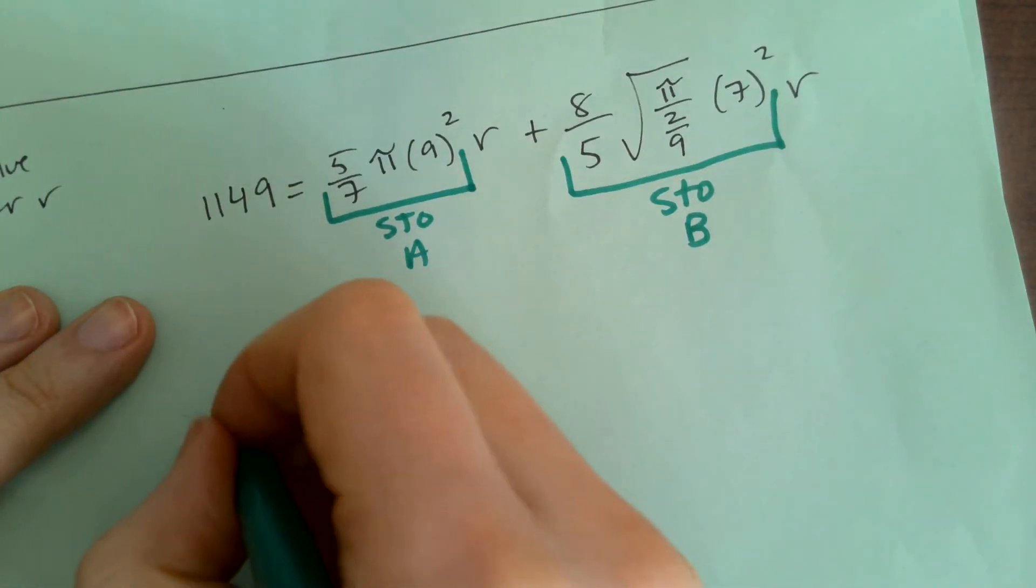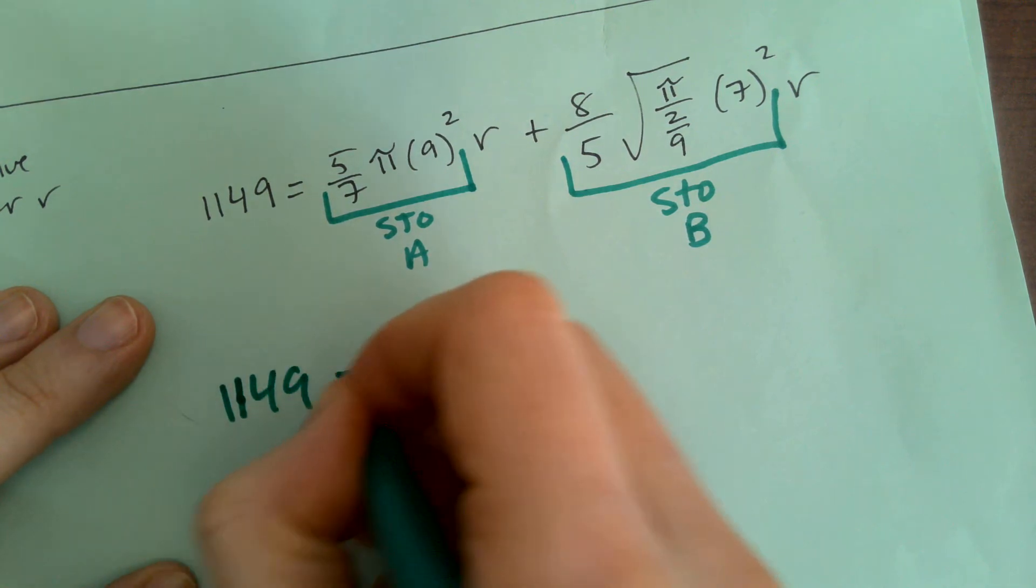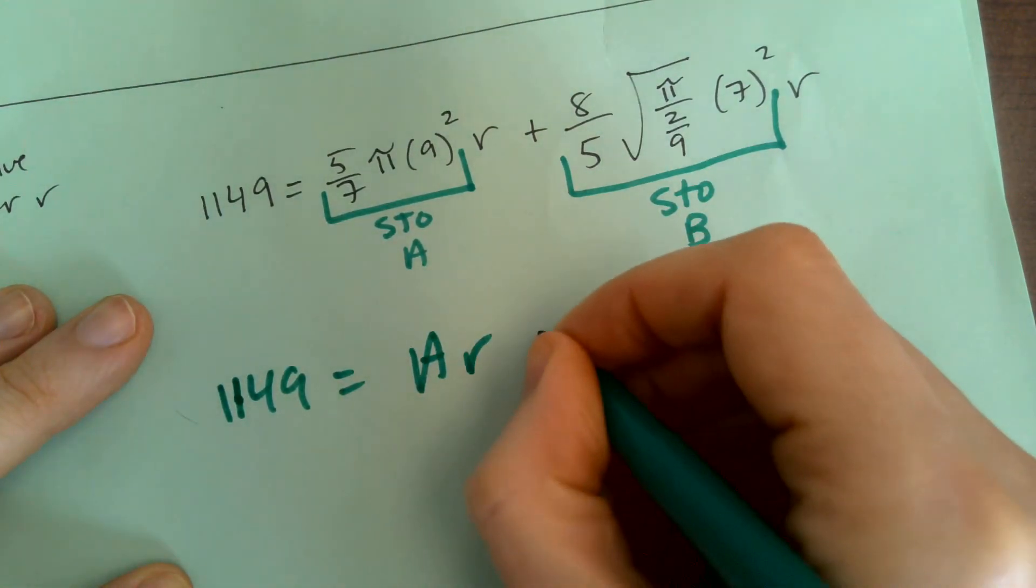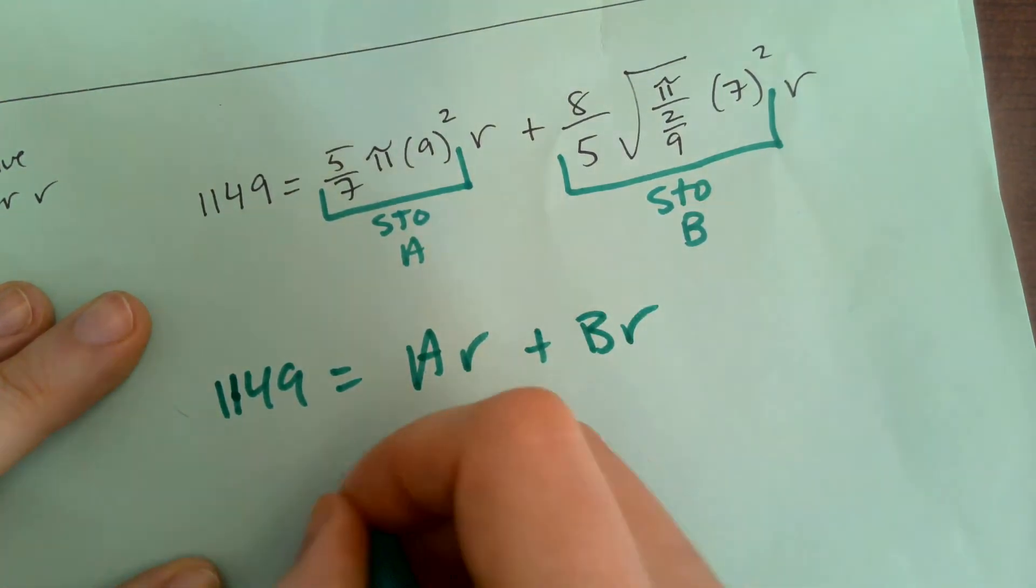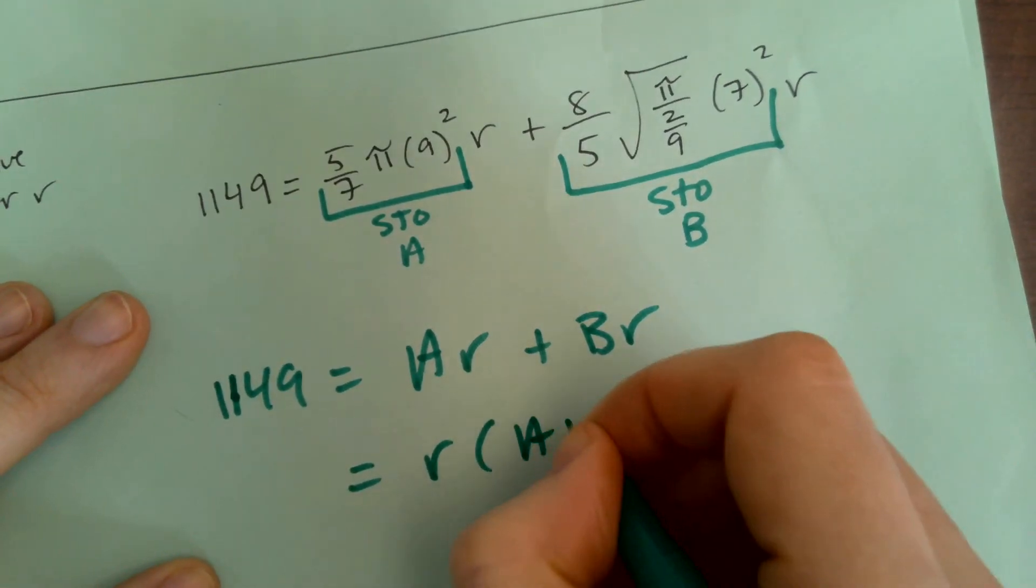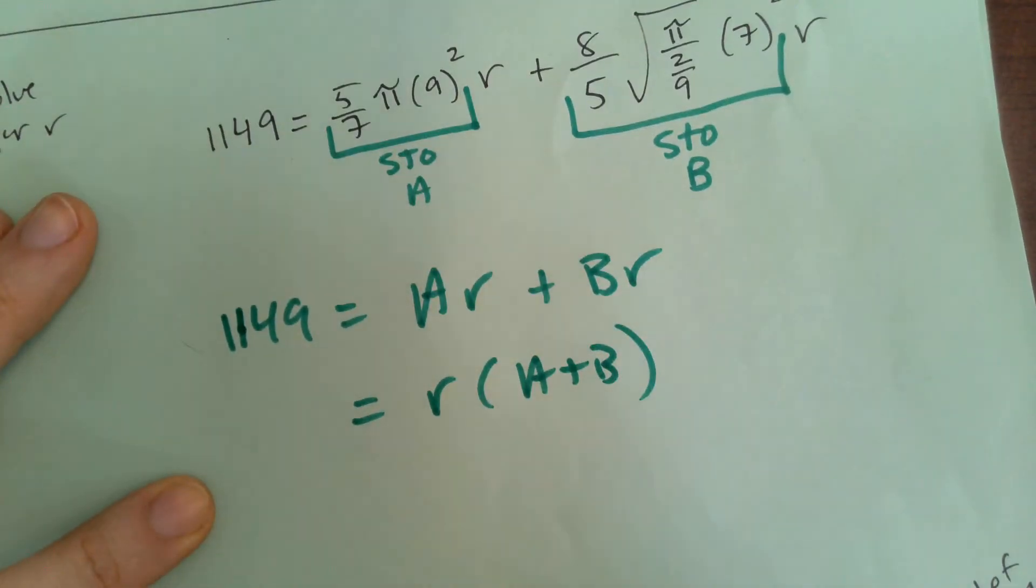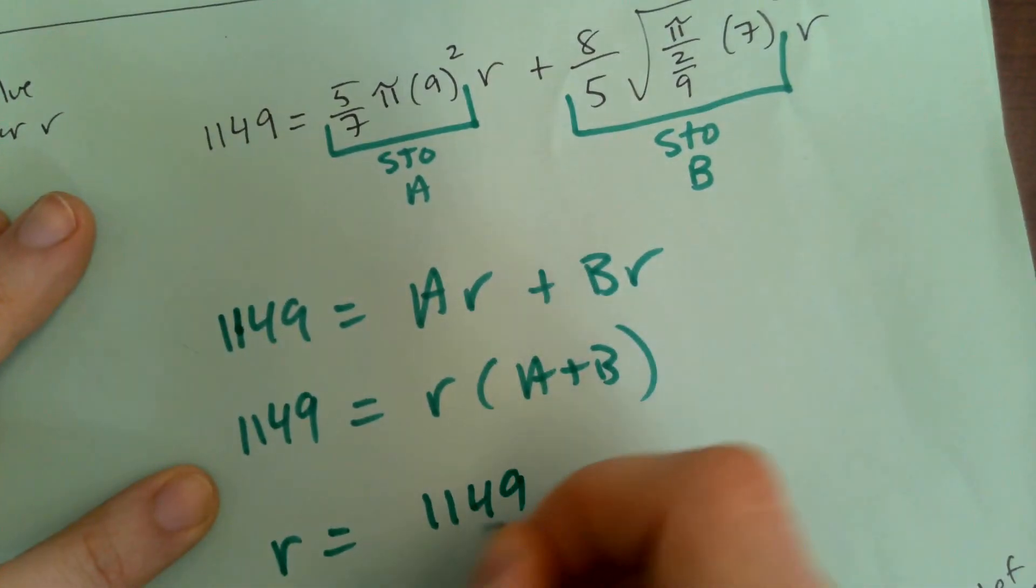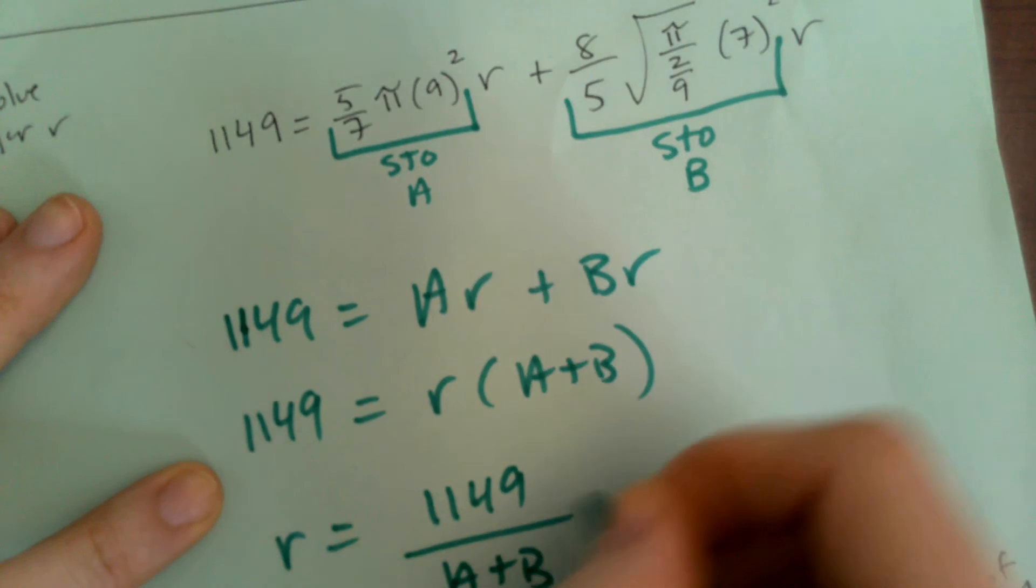So here's the other one. So 8 fifths pi over 2 over 9. Okay. I want this to be pi over 2 ninths. So, I want that to be. So, I'll make it clear on your practice. Oh, shoot. What am I doing? All right. Okay, so 8 fifths radical pi over 2 ninths. Okay, and then outside of the radical, we've got 7 squared. And I don't even need those parentheses. All right, and then this I will store as B.